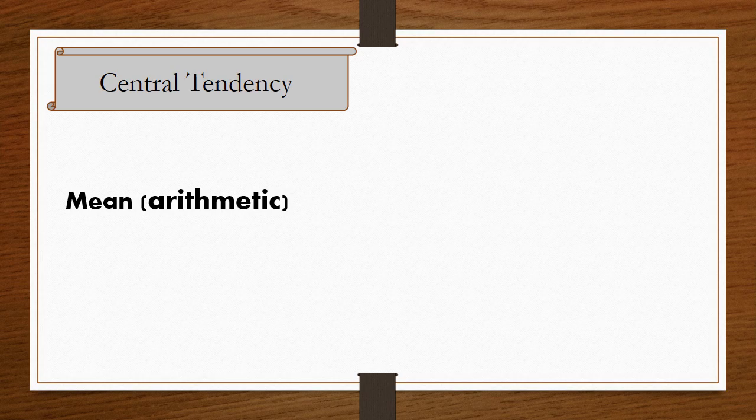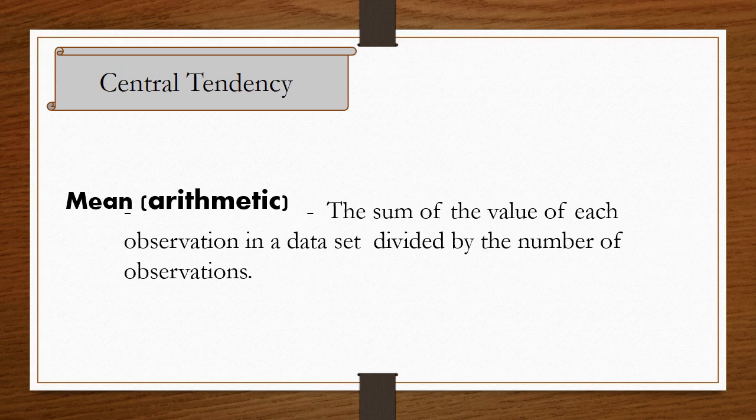The first measure of central tendency is the mean, also known as the arithmetic. It is the sum of the value of each observation in a data set divided by the number of observations.